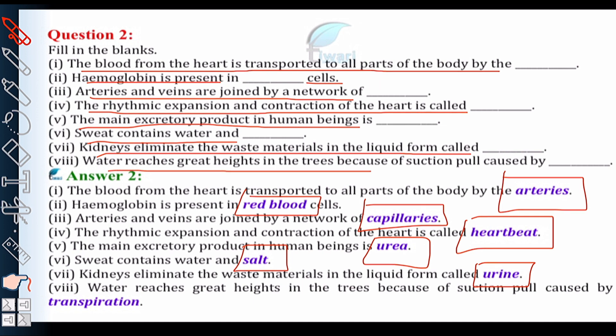Water reaches great heights in trees because of the suction pull caused by transpiration. When transpiration occurs in plants, a suction pull is created which draws water upward from the roots. This is possible because during transpiration, excess water evaporates back into the atmosphere through the leaves.